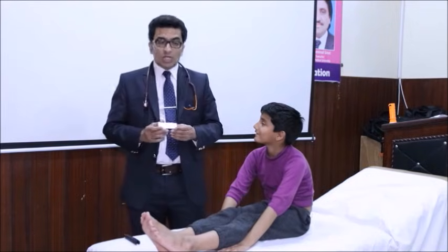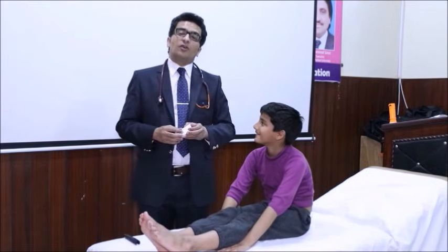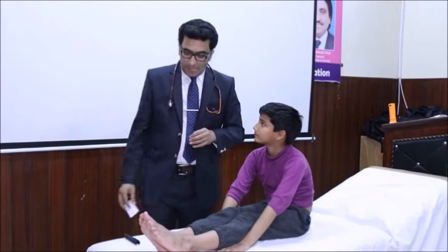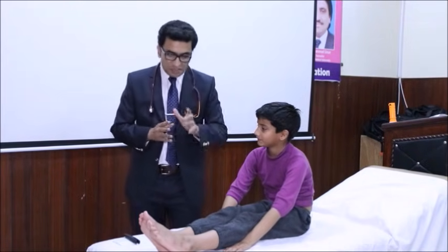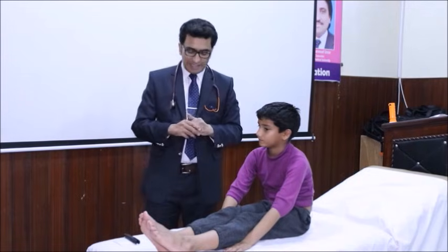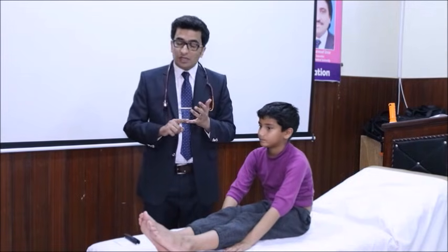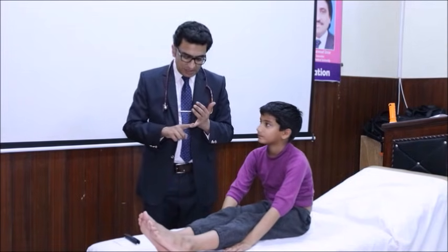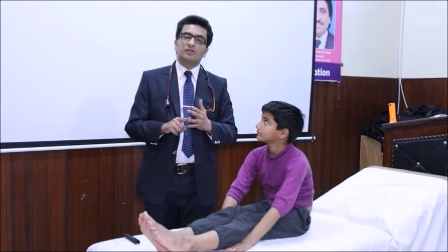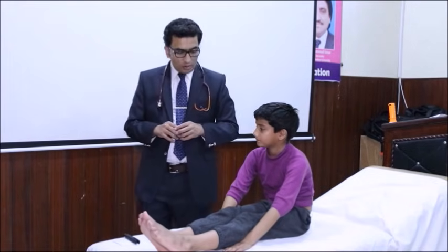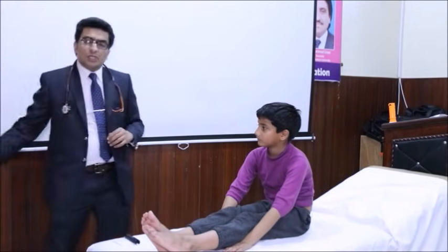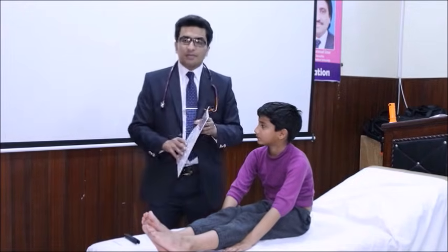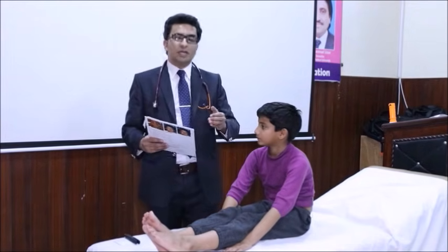The second cranial nerve is the optic nerve. The optic nerve examination has four parts: one is visual acuity, the second is color vision, the third is visual field, and the fourth is fundoscopy. Ideally, visual acuity should be checked by a Snellen chart, but in exam settings you can use a crude method.